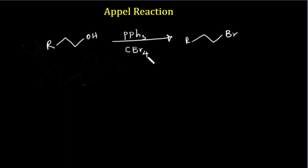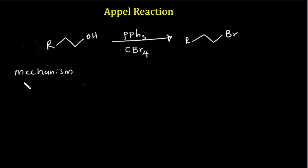Hello everyone. In this video I'm going to talk about the mechanism of the Appel reaction. In the Appel reaction, this is the general reaction — when you have an alcohol, you can convert it to a halide using this condition. The mechanism of this reaction is actually very simple, and I will explain it now.